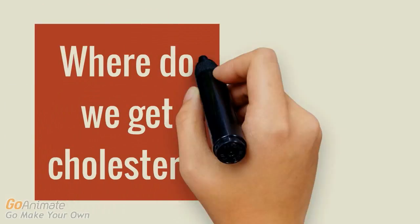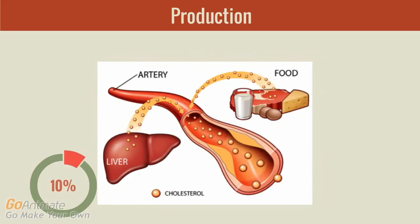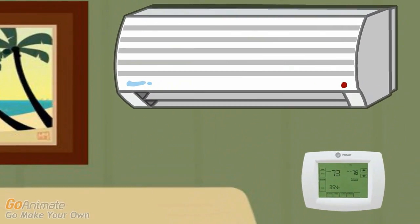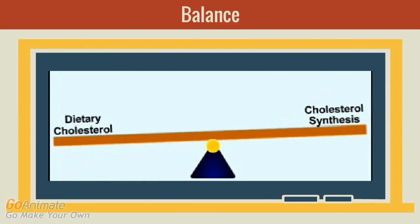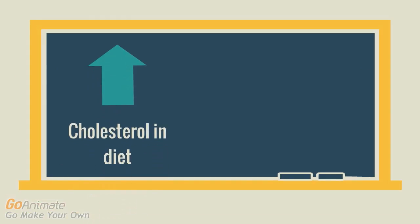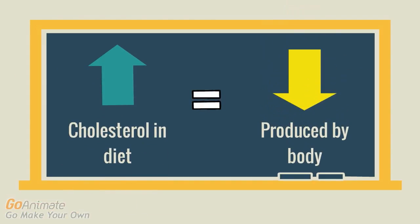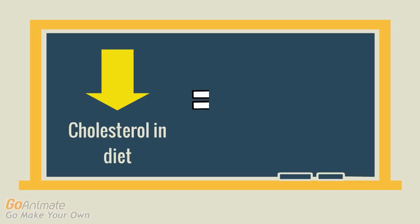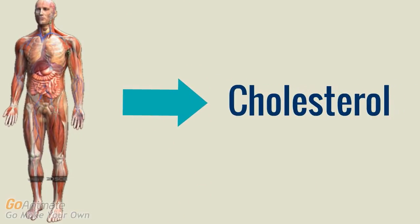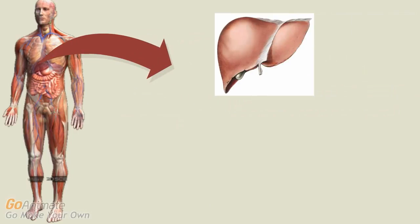Where do we get the cholesterol our body needs? There are two sources of cholesterol. The body produces about 75% of the cholesterol it needs, and the remaining 25% we get from our diet. Similar to a thermostat, the body monitors and ensures that cholesterol levels in the blood are balanced at all times. For example, if cholesterol levels are high in someone's diet, the body responds by slowing down cholesterol production. On the other hand, if the diet doesn't have enough cholesterol, the body compensates by increasing cholesterol production. Almost all cells in the body are able to produce the cholesterol that they need, but the majority of the cholesterol is produced by liver cells.